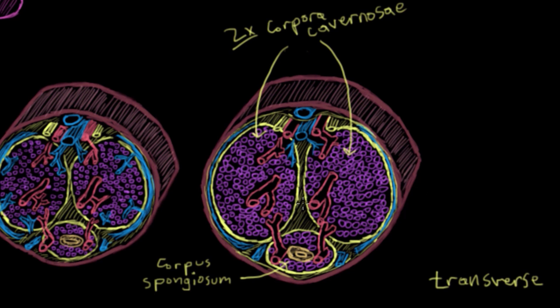By the way this is the bottom of the penis, the underside. This is the top of the penis. And also this structure here in the center, this tube, is the urethra.